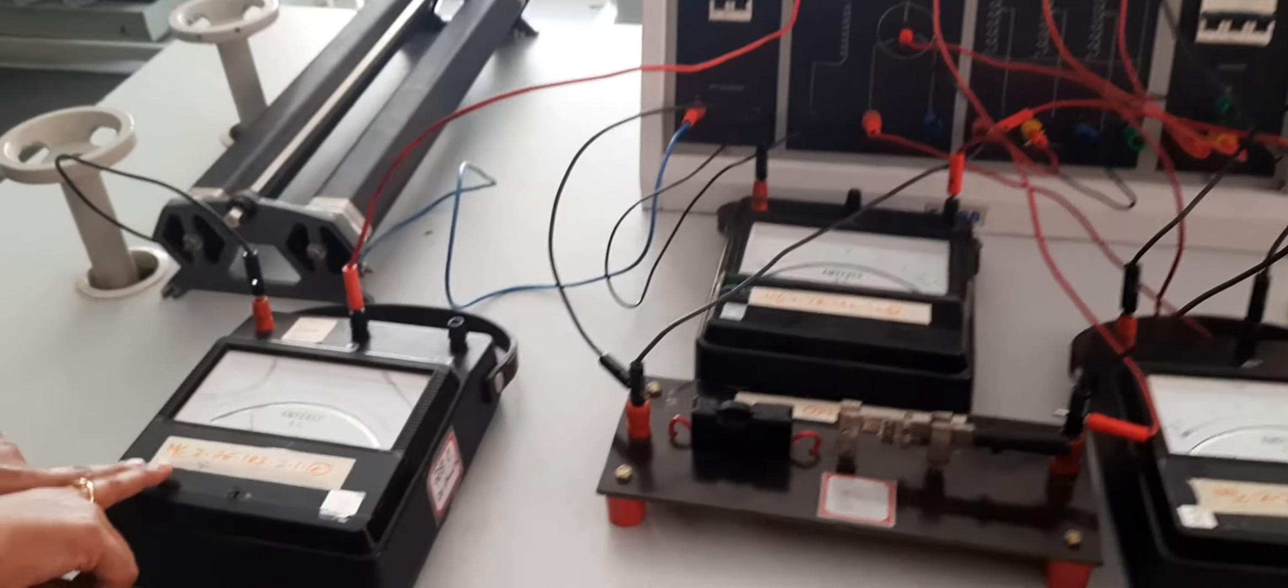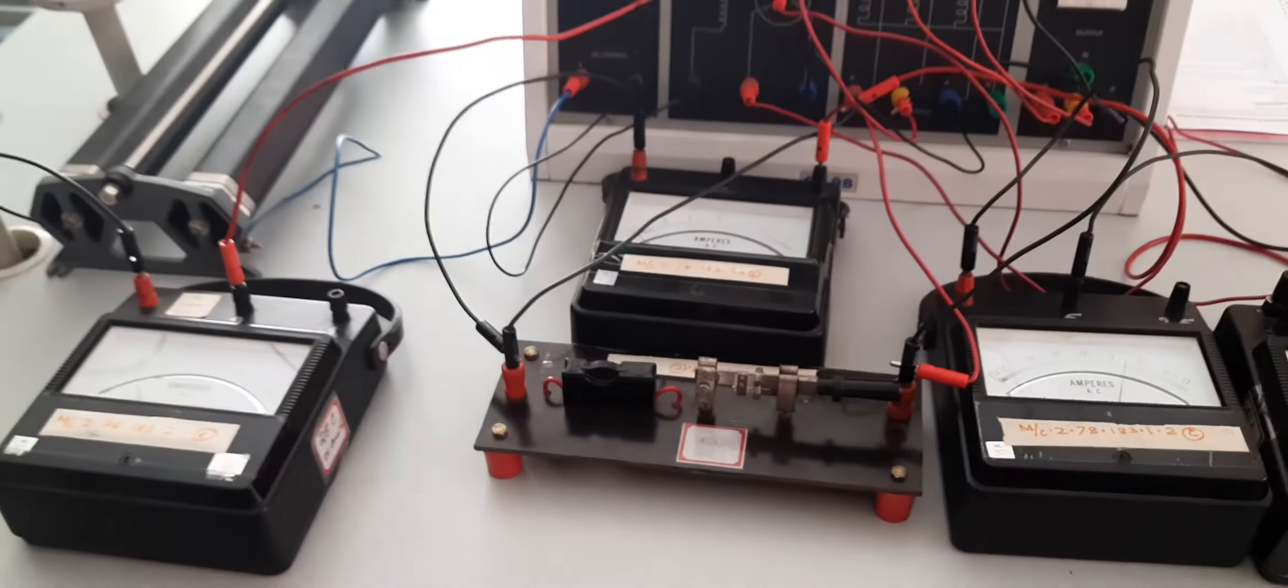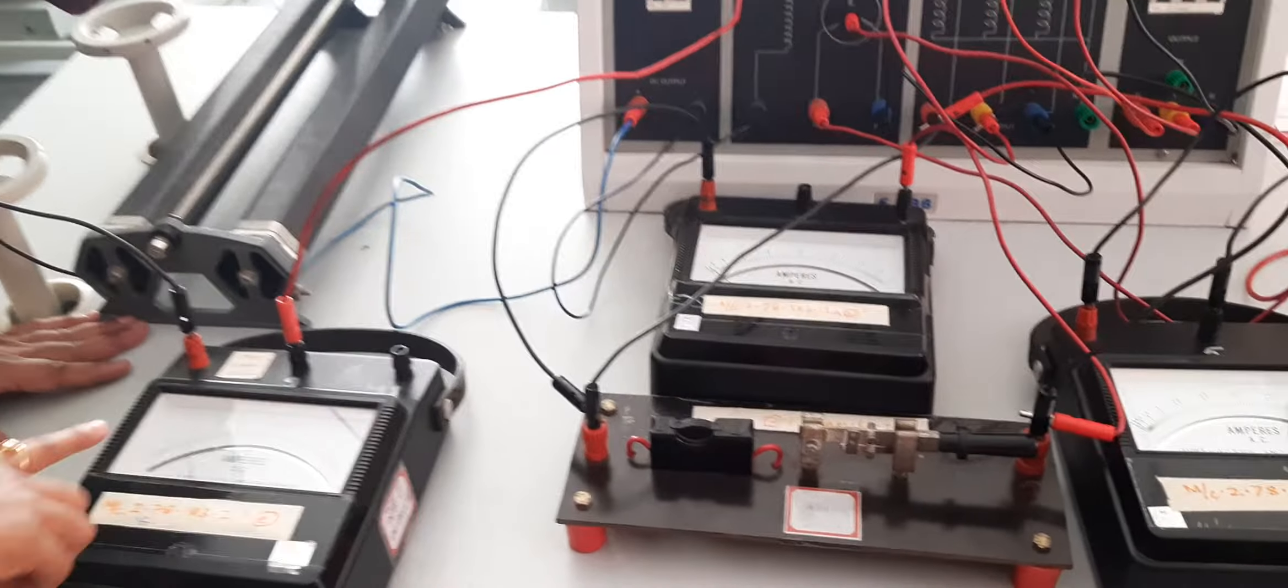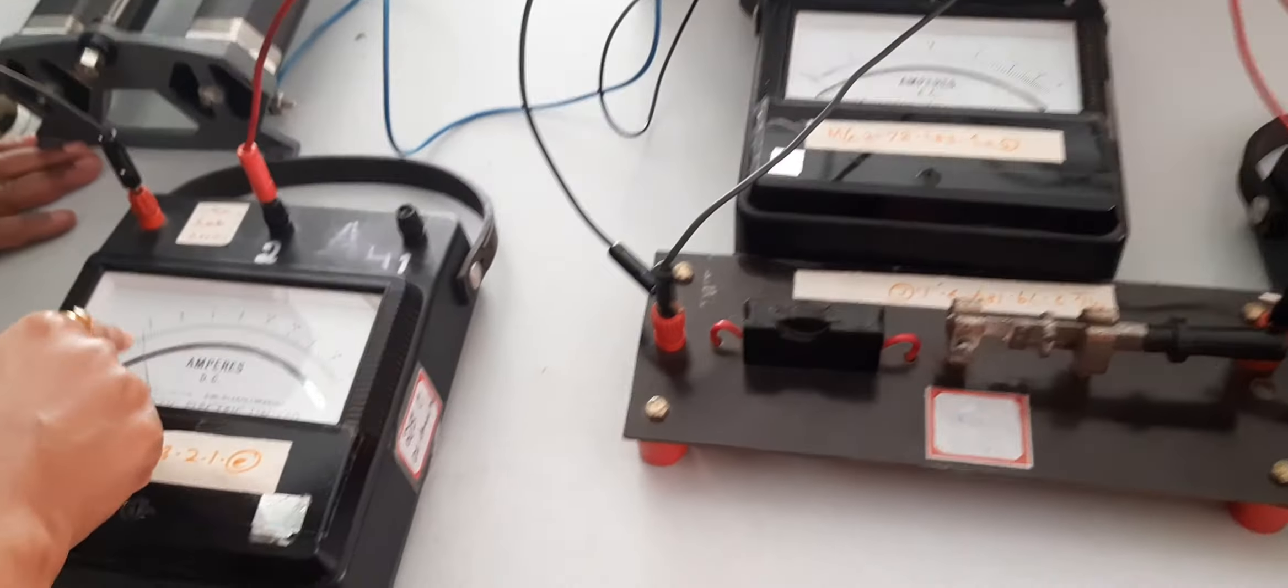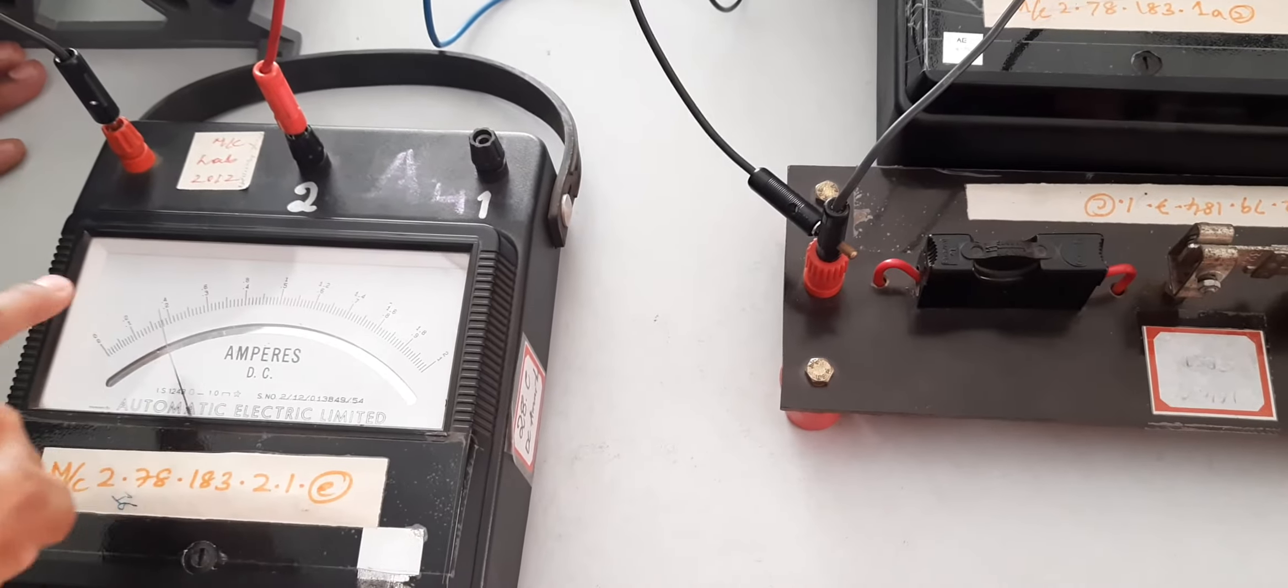This is the field current, this is the armature current has to be noted. So the initial armature current is around - this is the field current - so the initial field current is around 0.4 amps.